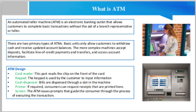ATMs require consumers to use a plastic card — either a bank debit card or a credit card — to complete a transaction. Consumers are authenticated by a PIN, a personal identification number, before any transaction can be made. Many cards come with a chip which transmits data from the card to the machine. These work in the same fashion as a barcode that is scanned by the card reader.